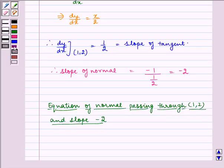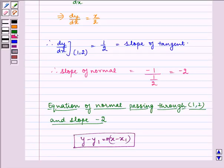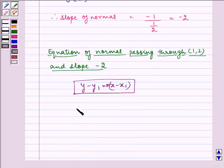The general form of the equation is y minus y1 is equal to m multiplied by x minus x1. So y minus y1, where our slope m is minus 2, multiplied by x minus 1.